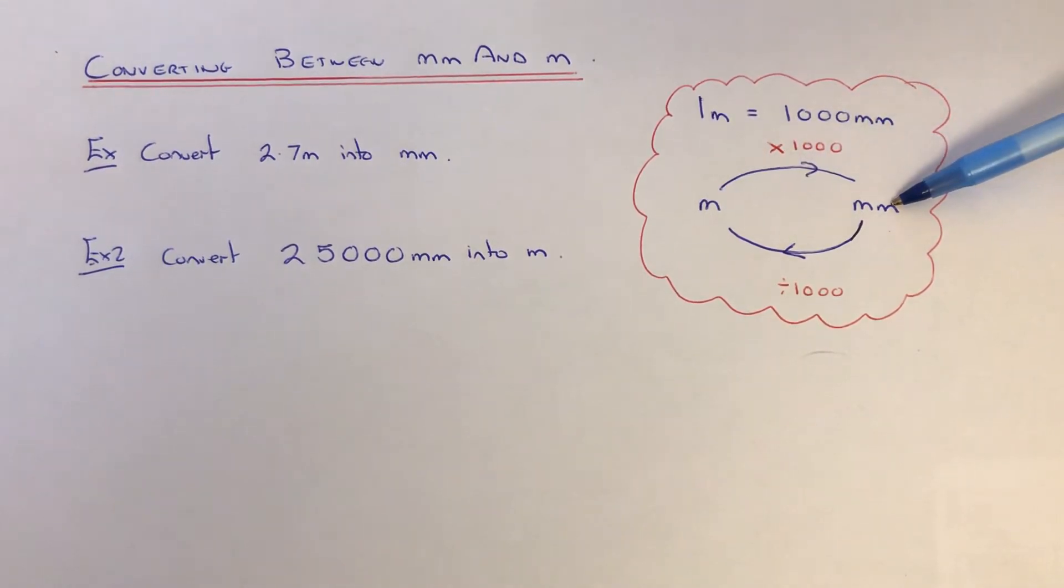meters to millimeters, you need to times the number by a thousand. If you're converting a number back from millimeters into meters, then you need to divide the number by one thousand.